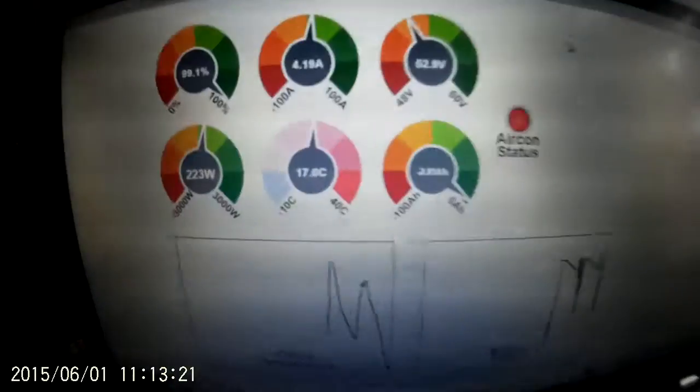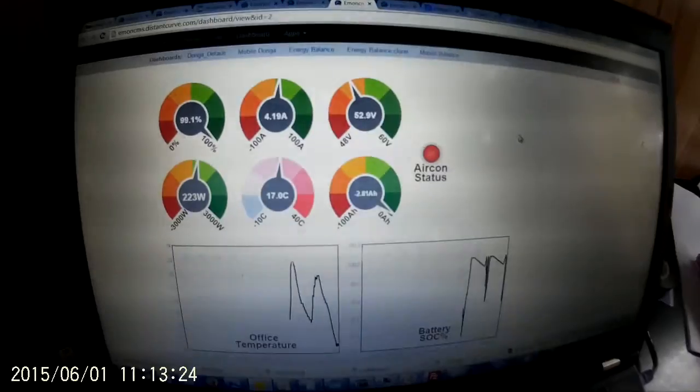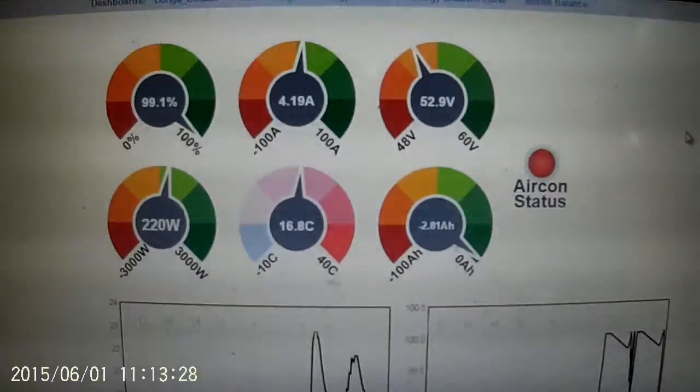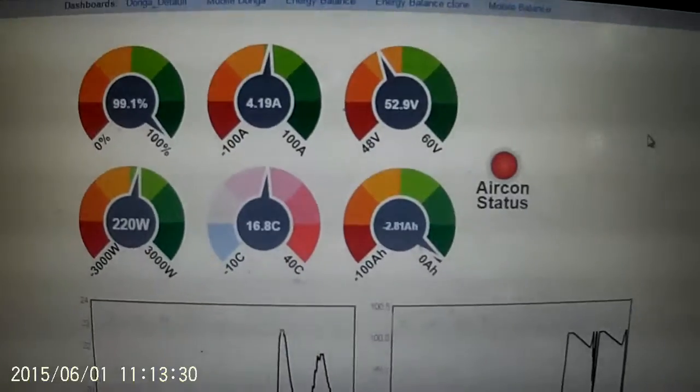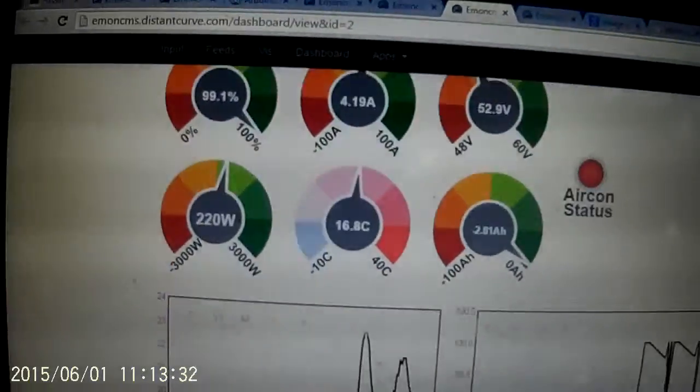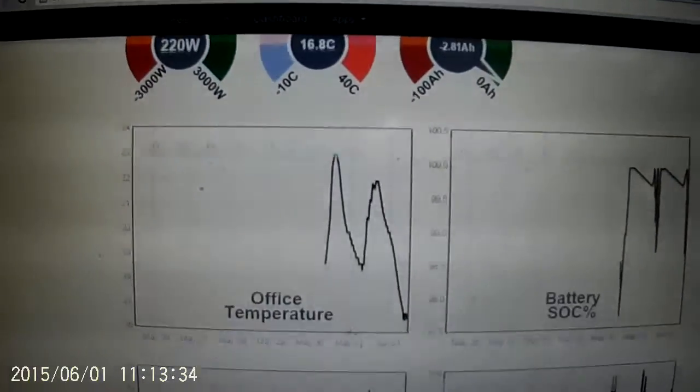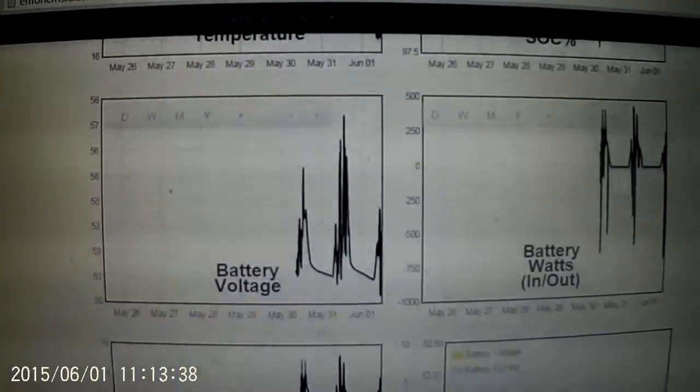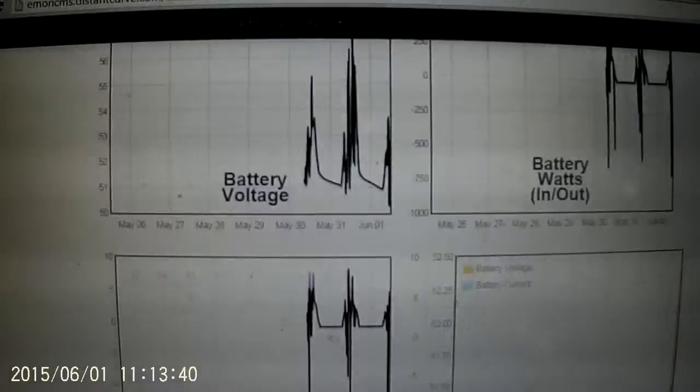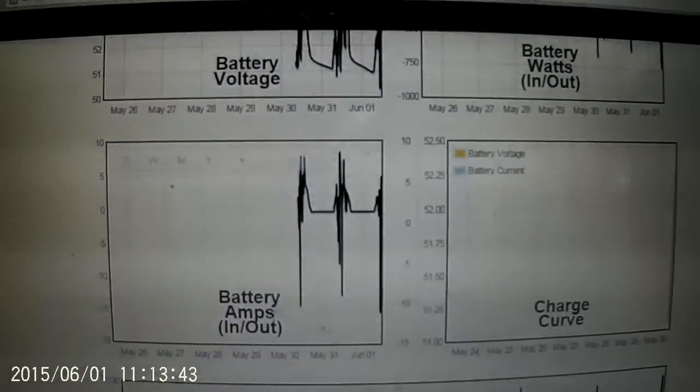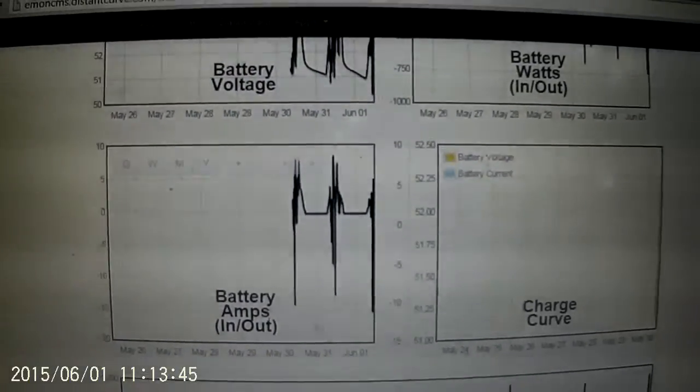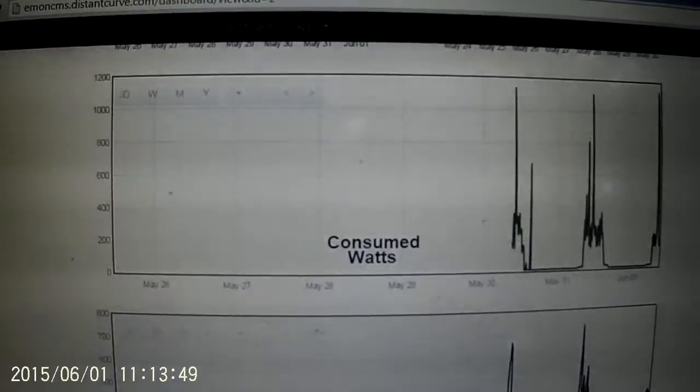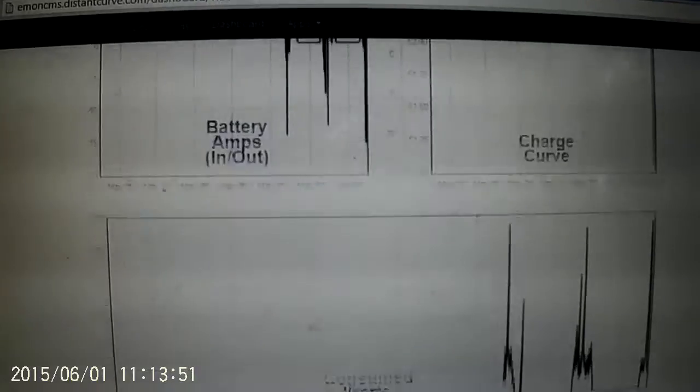I hope this is relatively clear but here you can see we've got some monitoring happening here. So I've got office temperature, battery state of charge, battery voltage, battery watts in or out, battery amps in or out and the charge curve. And also consumed watts and generated watts. So these are over time.